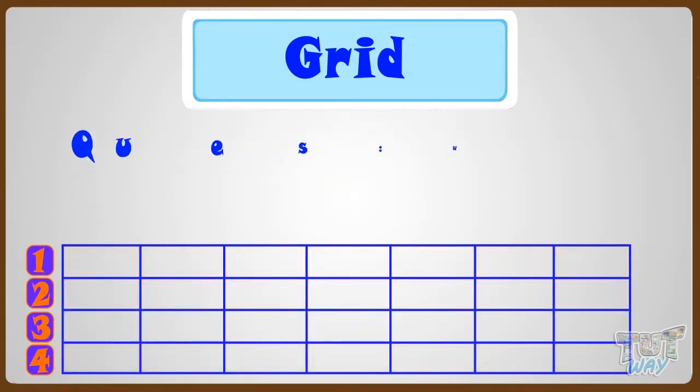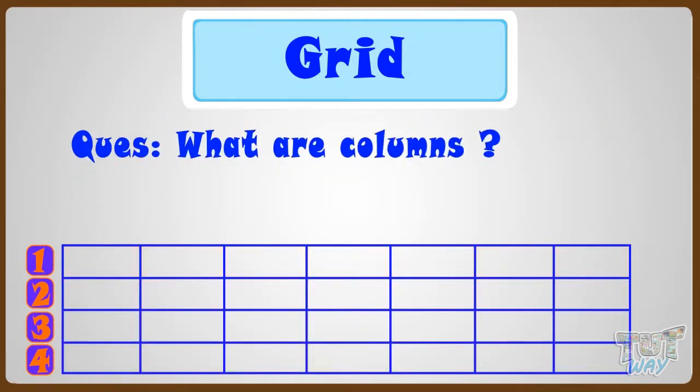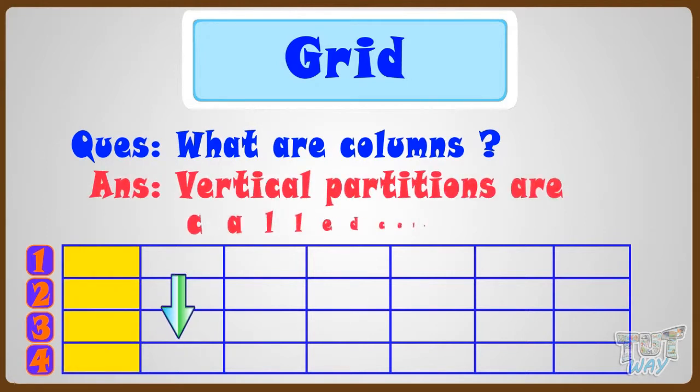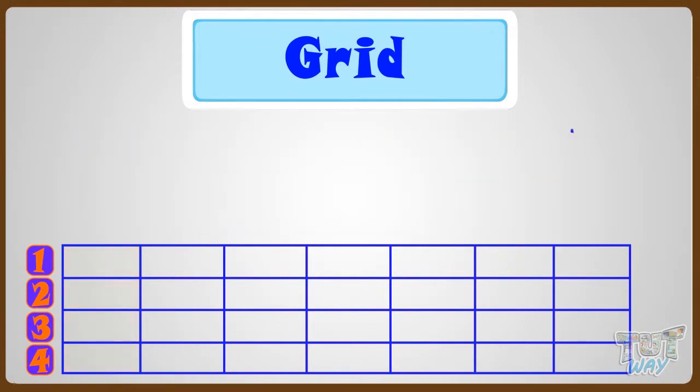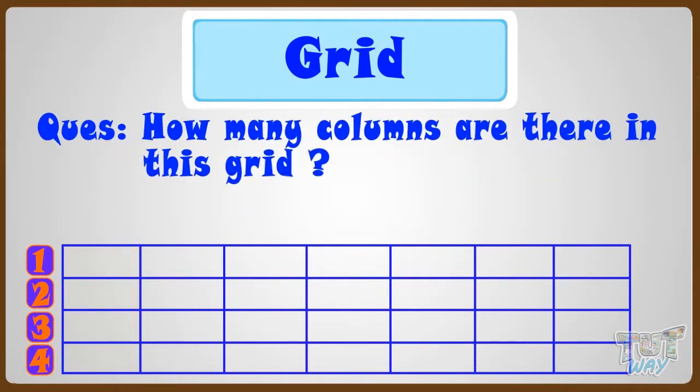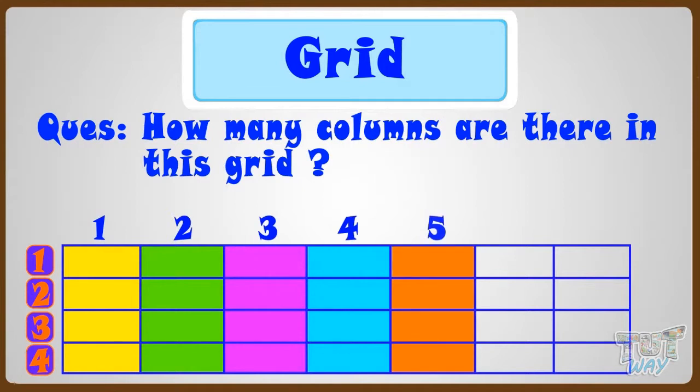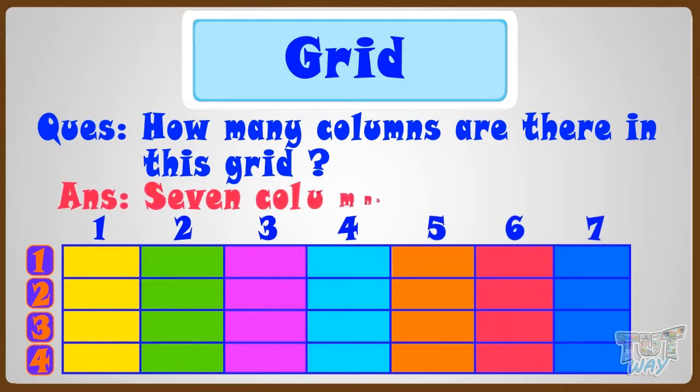Now let's see what are columns, and how many columns are there. These vertical partitions in the grid are called columns of the grid. Now let's count how many columns are there in this grid. 1, 2, 3, 4, 5, 6, 7. So, 7 columns are there in this grid.